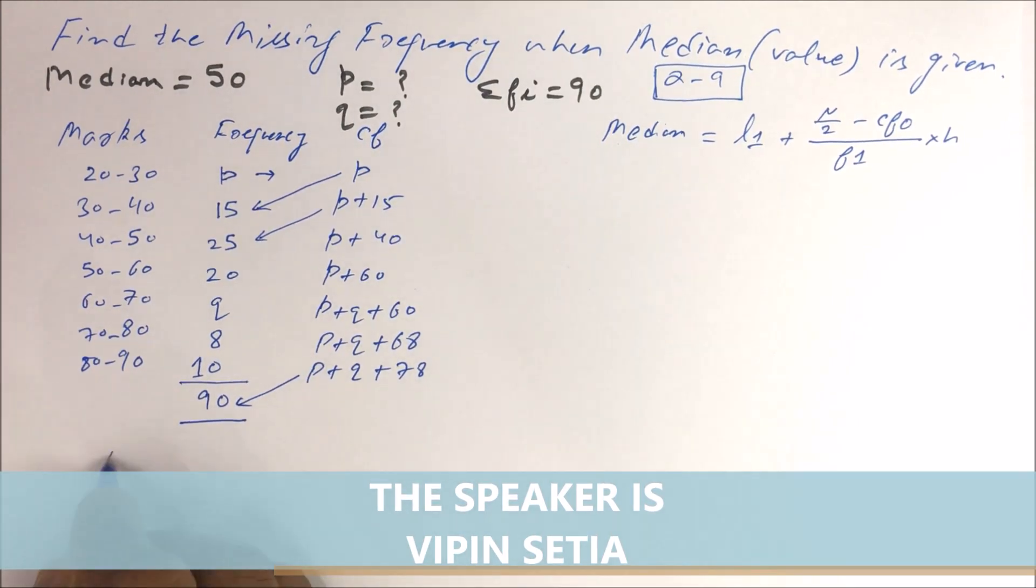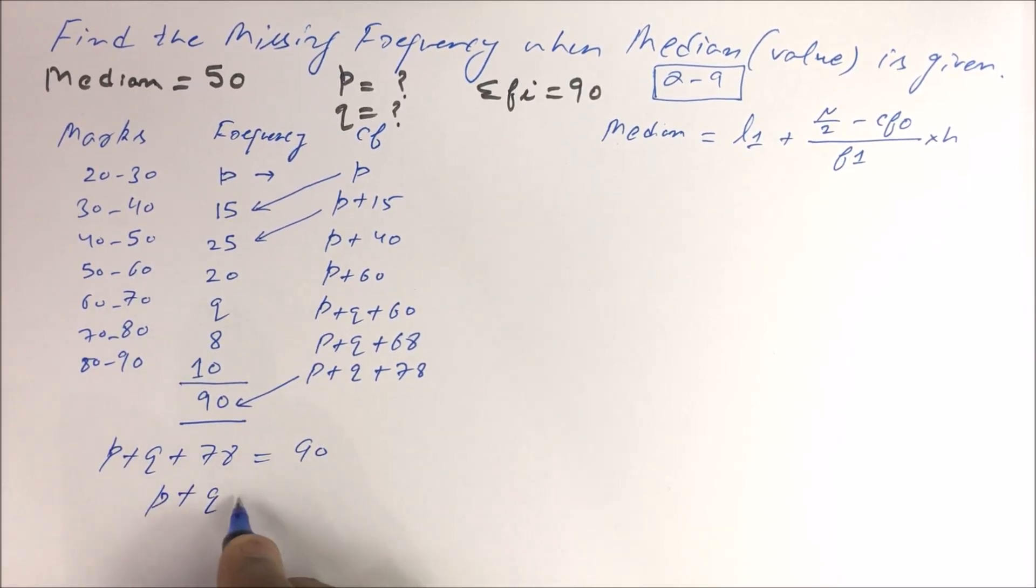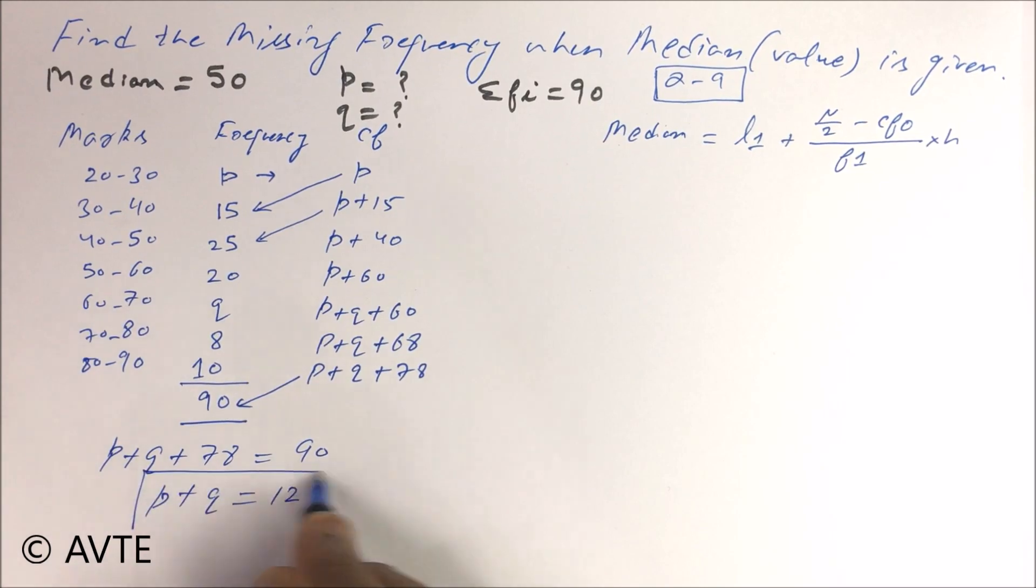This value is equal to this so your first equation is P plus Q plus 78 is equal to 90, that is P plus Q is equal to 12. This is your first linear equation in two variables.